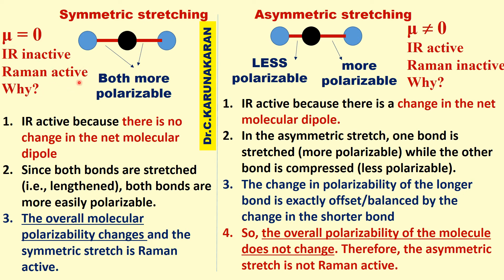Why is symmetric stretching Raman active? When both bonds are stretched, both bonds become more polarizable — the molecule becomes more ellipsoid, more elongated. So there is an overall change in polarizability. Since there must be a change in polarizability for Raman activity, symmetric stretching is Raman active. In asymmetric stretching, one bond is stretched (more polarizable) and one bond is compressed (less polarizable), so the change in polarizability of the longer bond is exactly offset by the shorter bond.